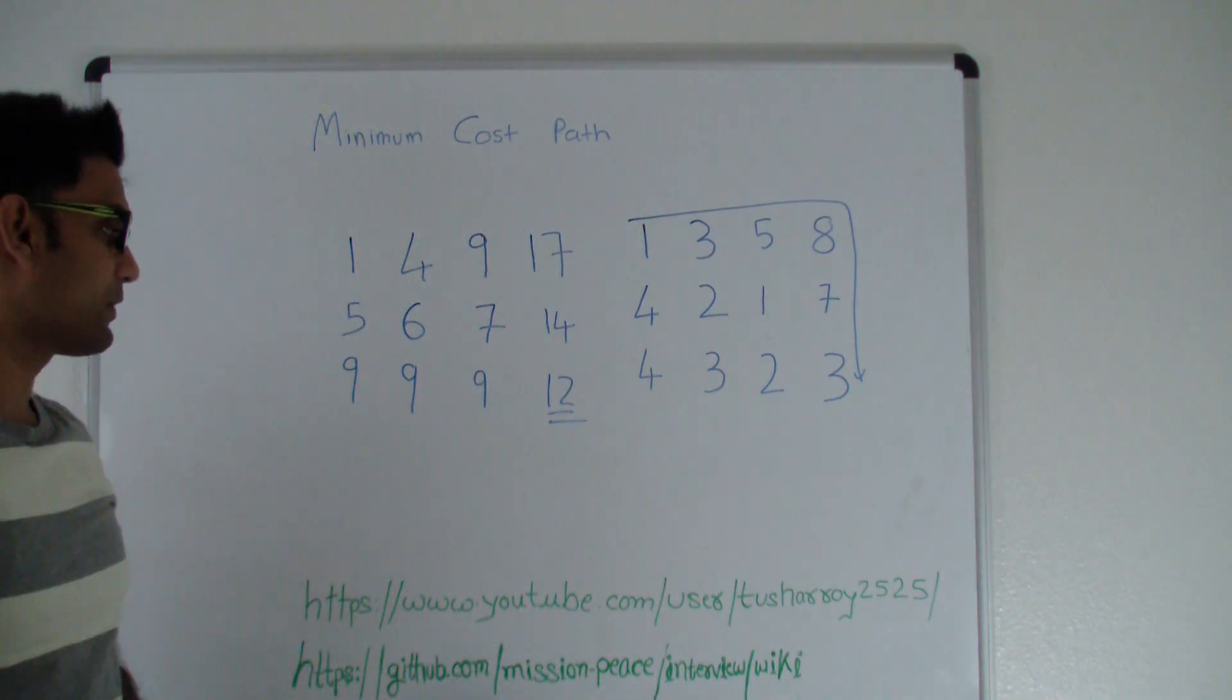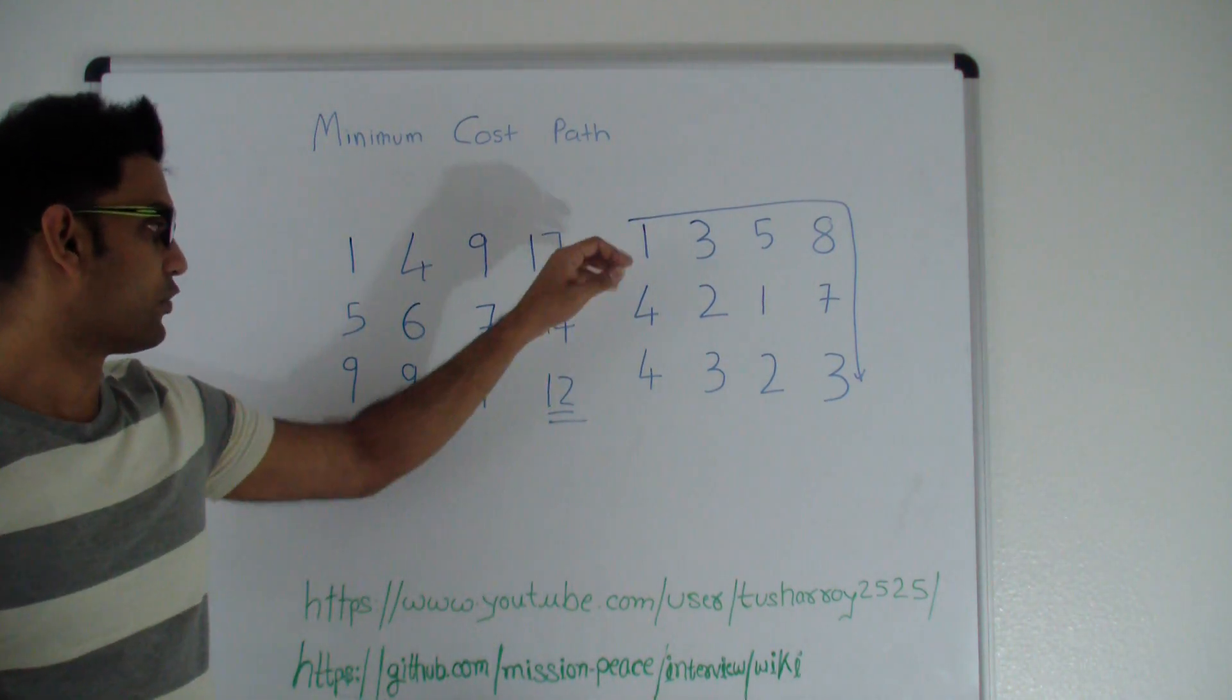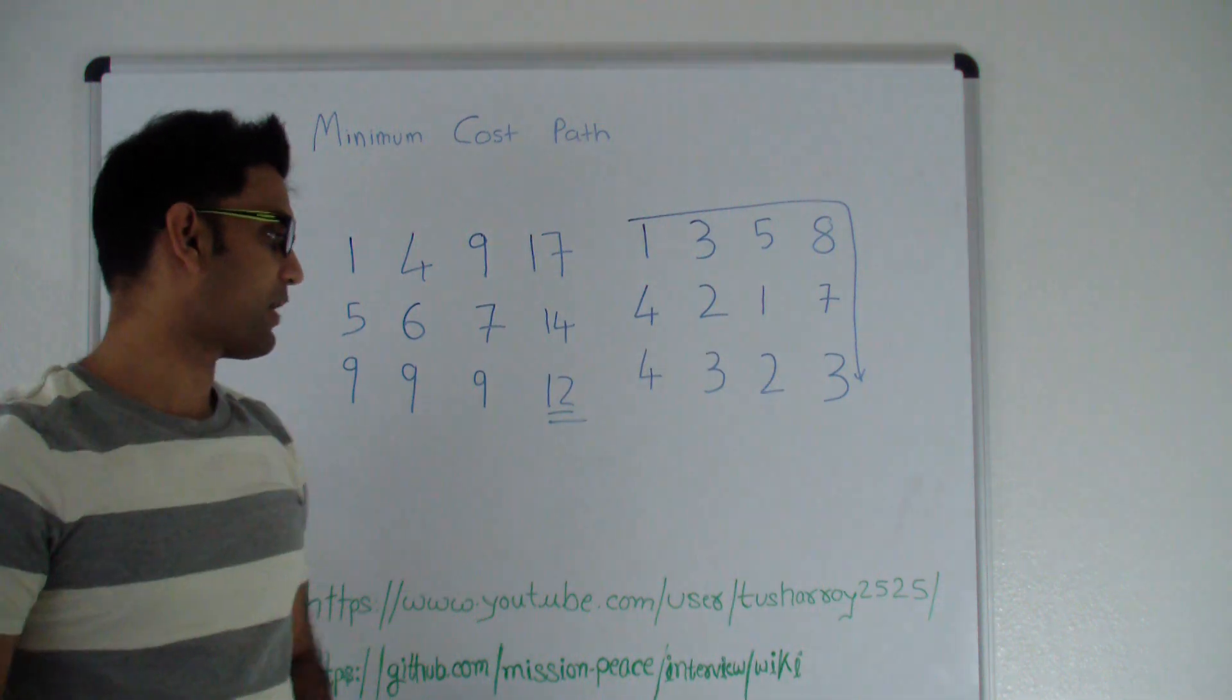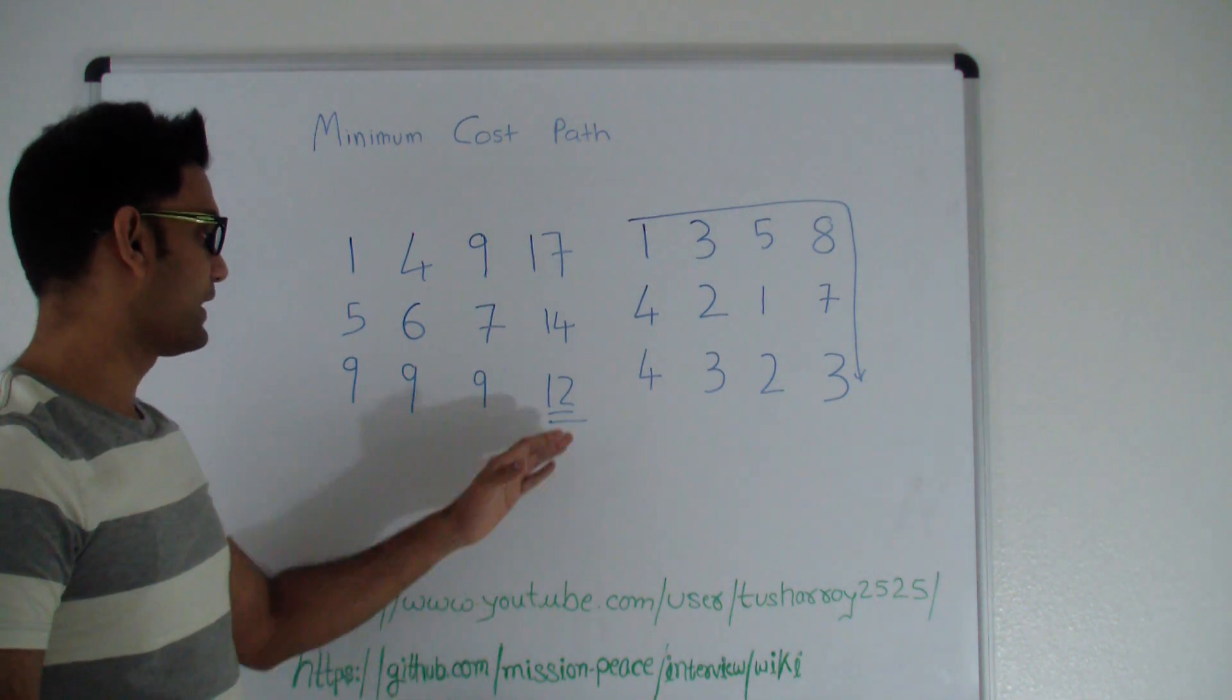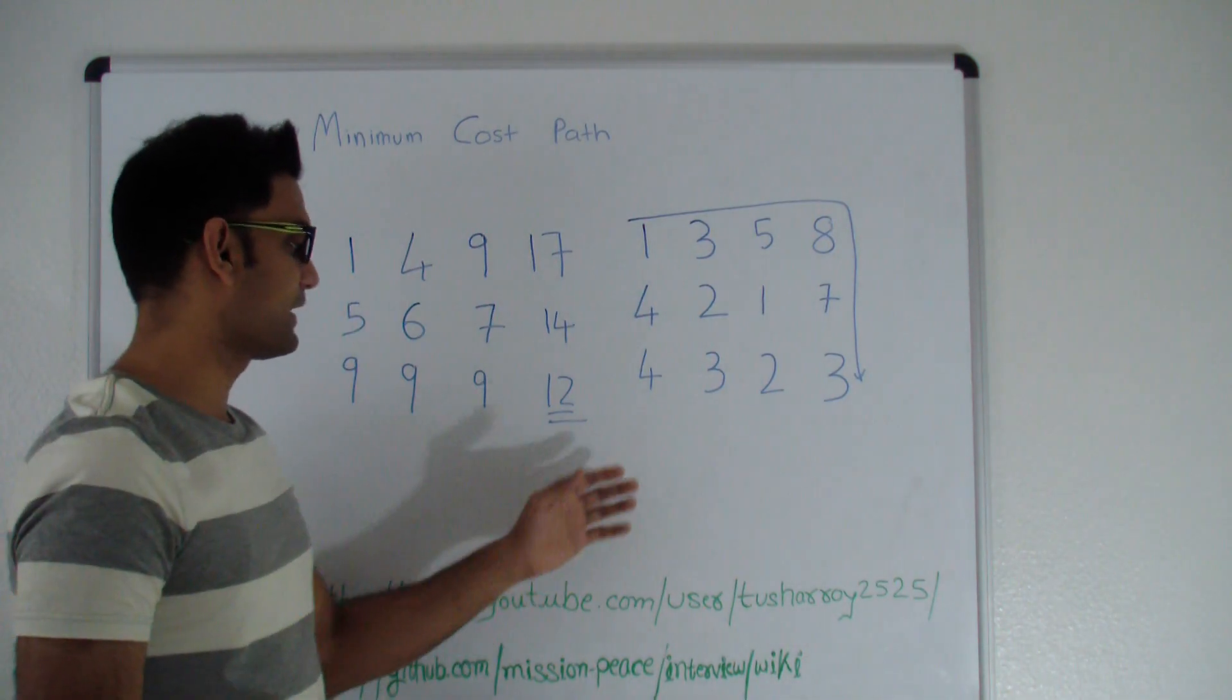So 12 is the minimum it will cost you to go from top left to bottom right. If someone asks you what is the actual path, we can go back into this matrix and get the path.